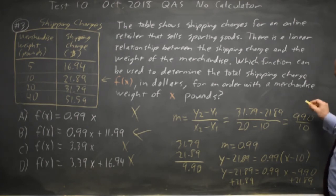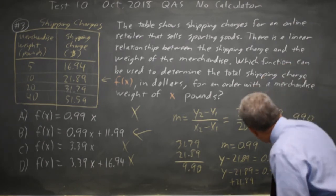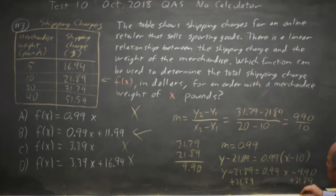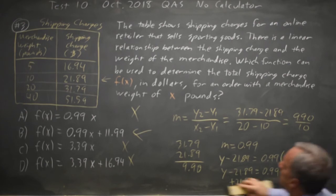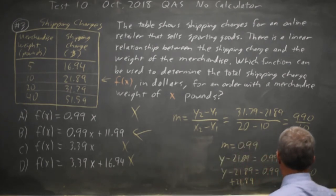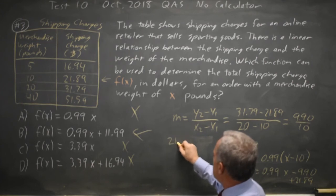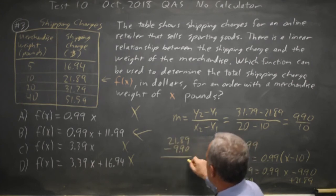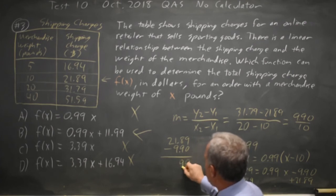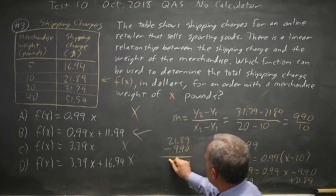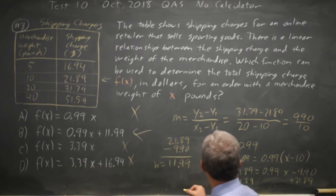And I don't have a good space to squeeze that in. So let's put that, erase this, and work there. 21.89 minus 9.90 is 11.99 for the y-intercept.